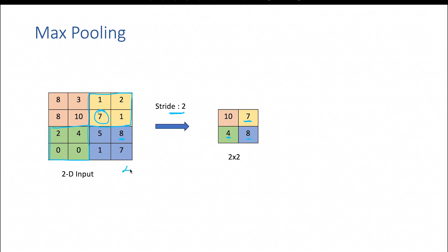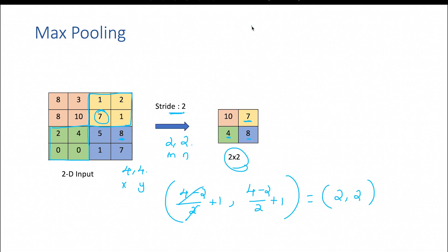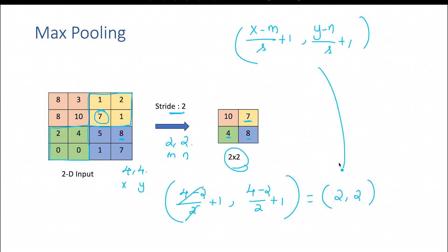The input shape here is 4 by 4, the filter shape is 2 by 2 — this is x and y, this is m and n. So 4 minus 2 by 2 plus 1, and 4 minus 2 by 2 plus 1 is going to be the output shape. So 2 by 2 is going to result in a value of 1, so 1 plus 1 is 2. The output is 2 by 2, which follows the formula x minus m divided by s plus 1, y minus n divided by s plus 1. You can validate this in the example we have dealt with, and the validation is perfectly fine.